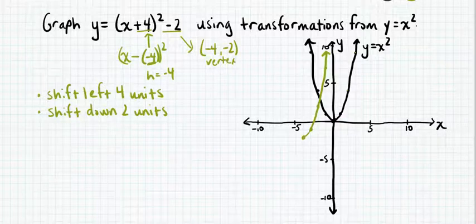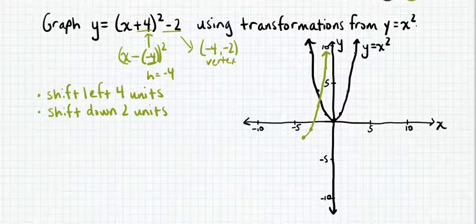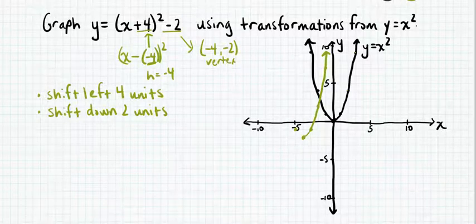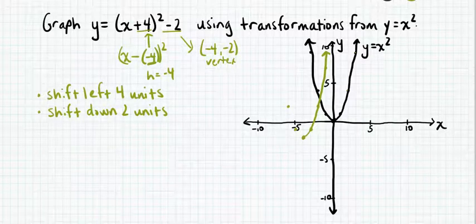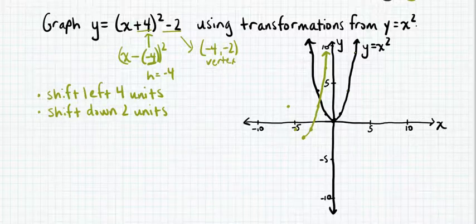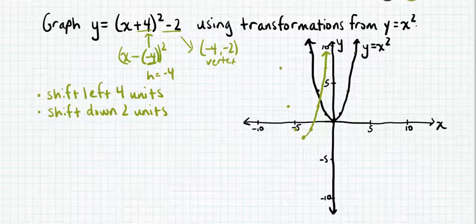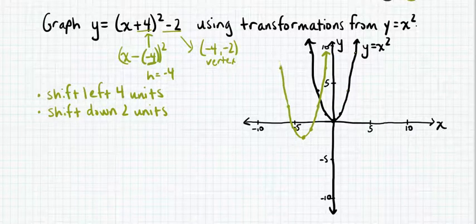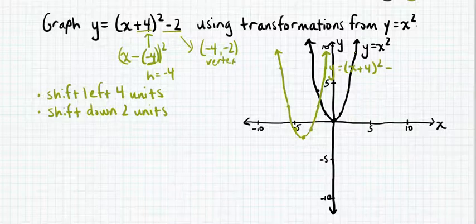To get the left-hand side, we take the key points from the left side of y equals x squared and count 4 units left and 2 units down. For each of those points, we get image points — for example (−1, 1) maps to (−5, −1). We can see the symmetric property with the transformed graph, with symmetric points on either side of the axis of symmetry through the vertex. Then draw a smooth curve through the left-hand side of the parabola and label it with the equation: y equals x plus 4 all squared minus 2.